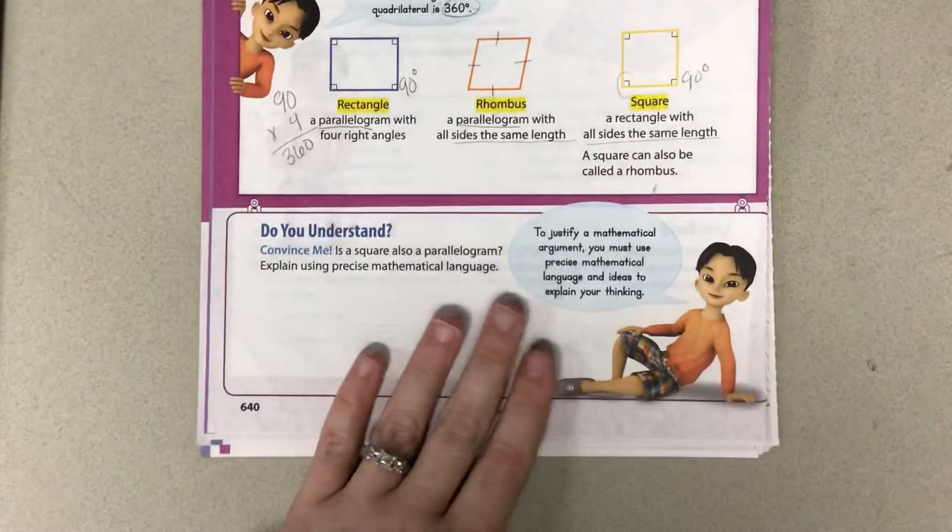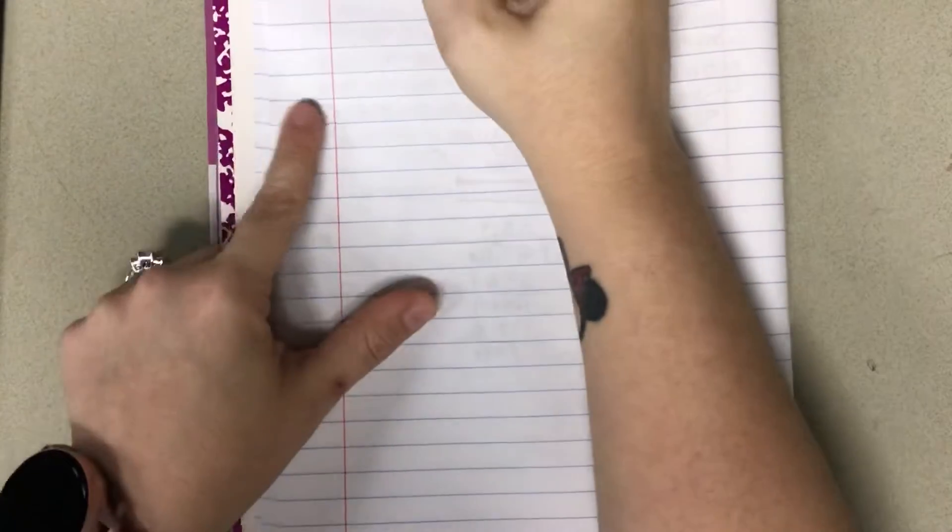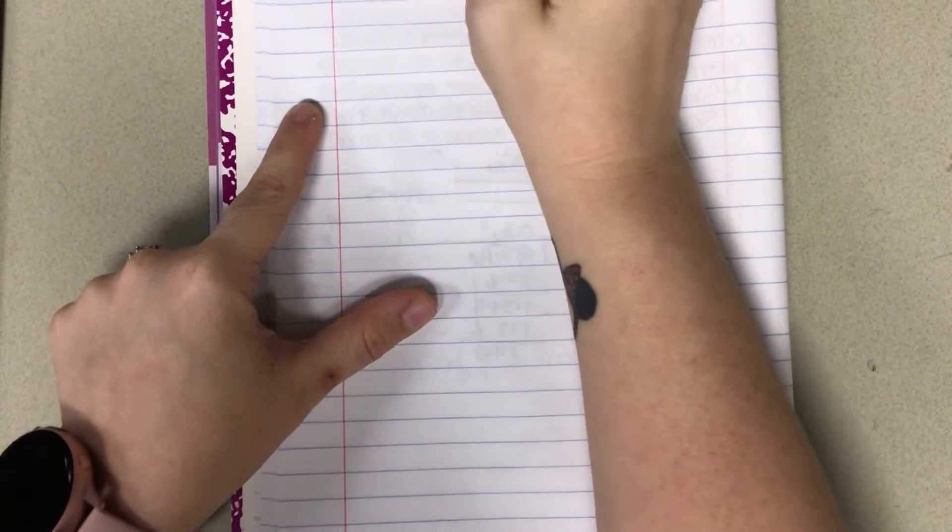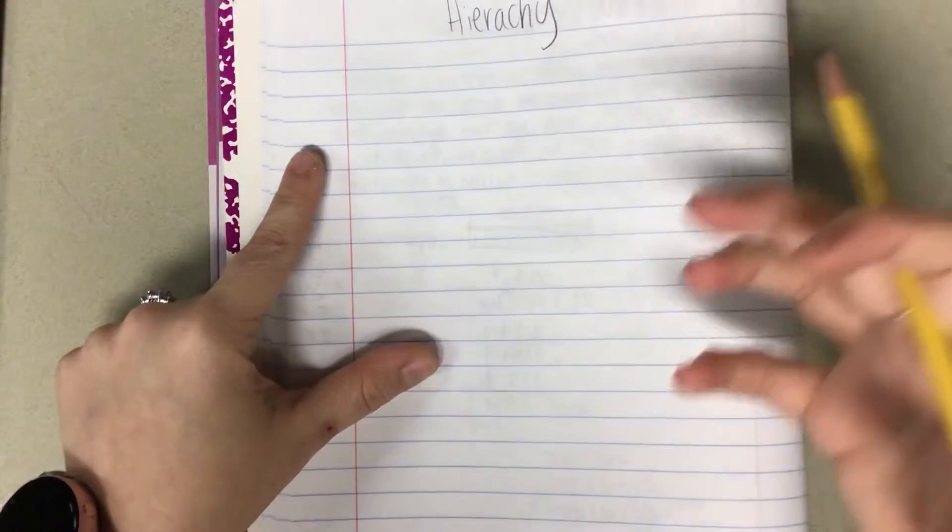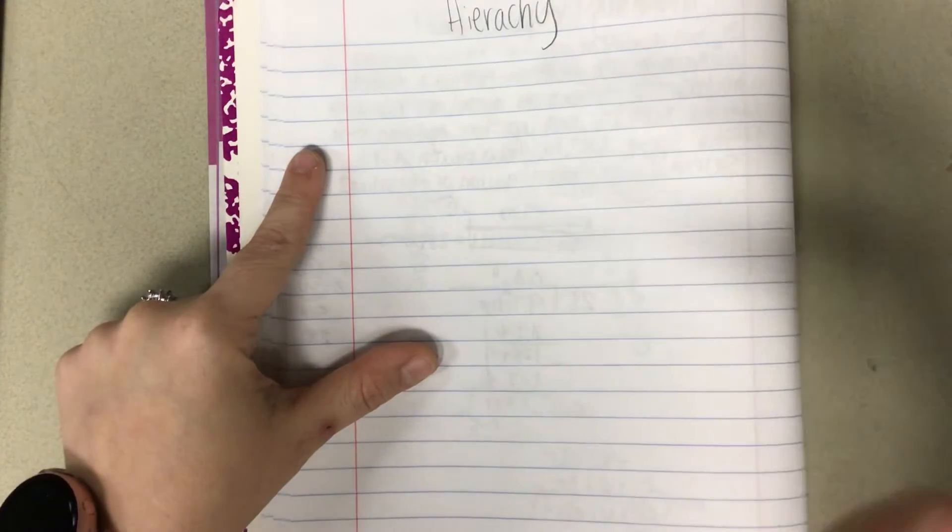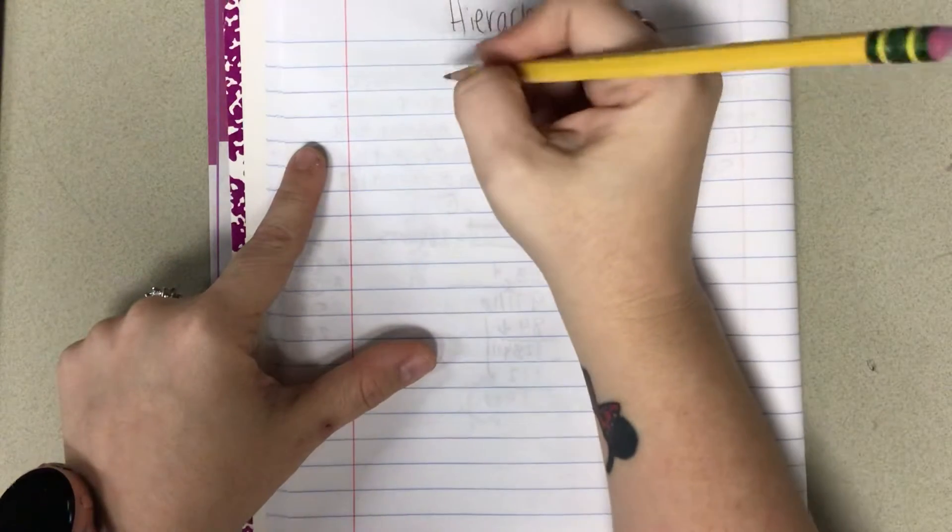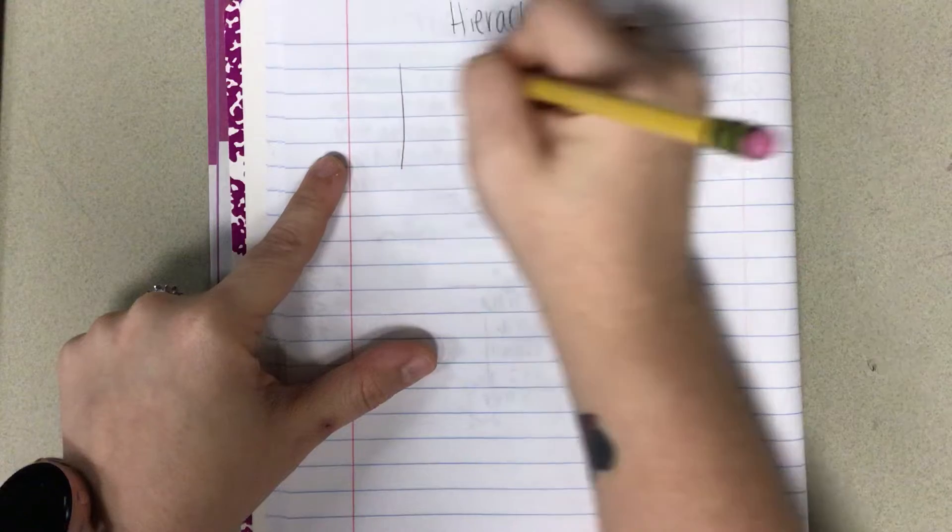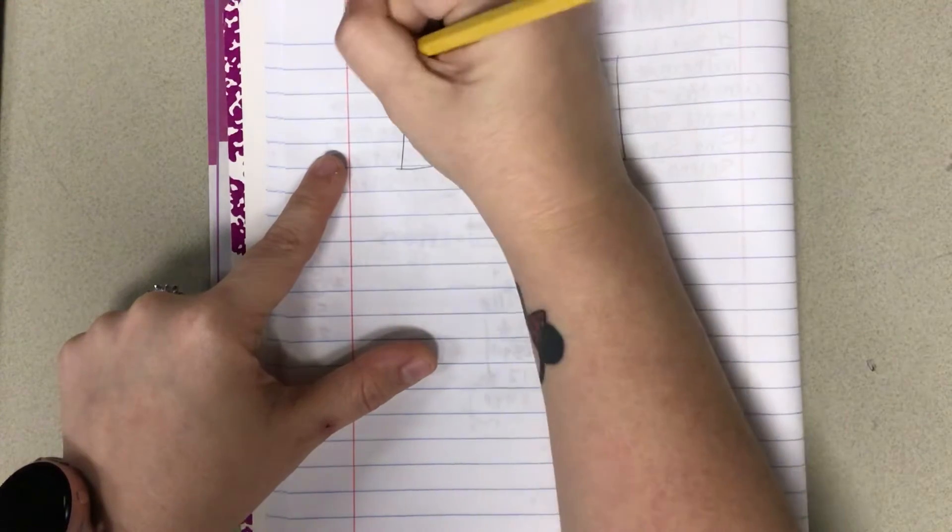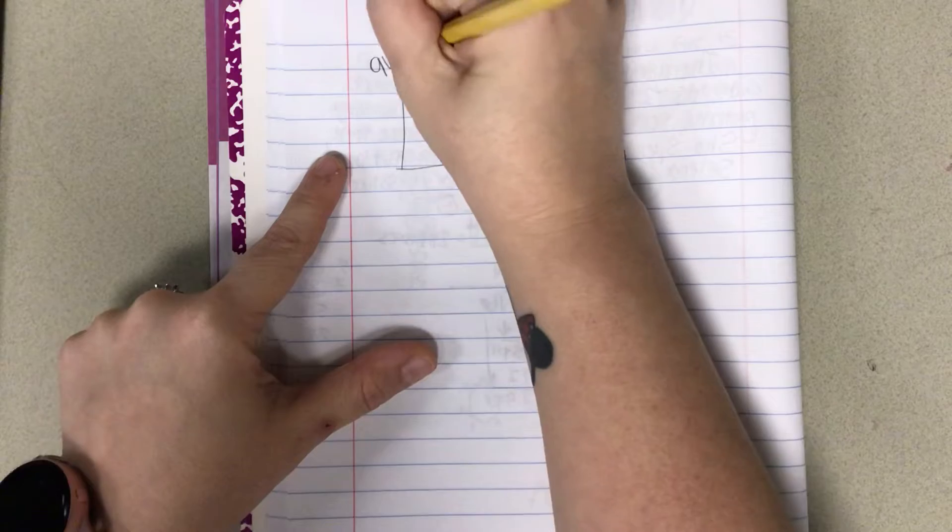So let's stop and let's make, before we continue on, it's called a hierarchy. What we're looking at is how they all kind of connect together. So we're going to have a box here, and this is going to be called quadrilaterals.